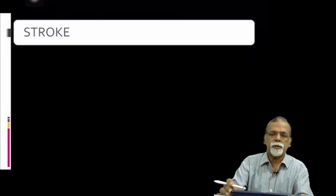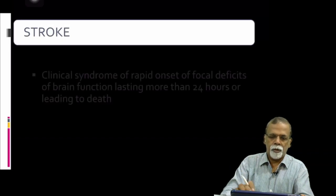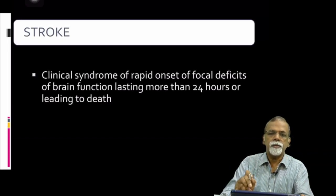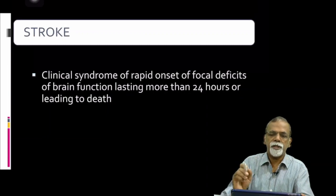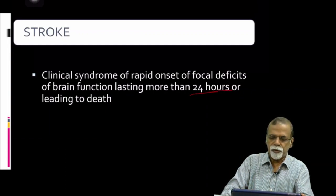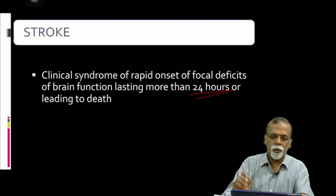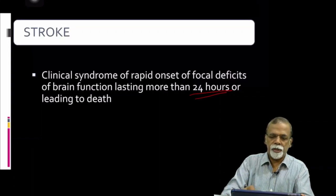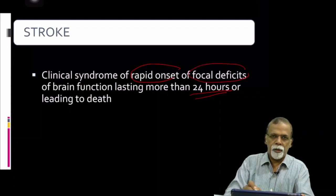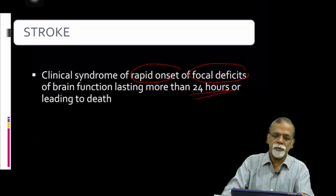How do we define stroke? Stroke is a clinical syndrome of rapid onset of focal deficits of brain function which lasts more than 24 hours, or leading to death. That is the definition of stroke — rapid onset focal deficits related to brain function lasting more than 24 hours, or it leads to death.